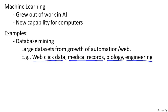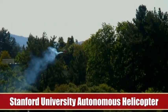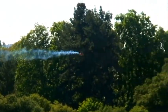A second range of machine learning applications is ones that we cannot program by hand. For example, I've worked on autonomous helicopters for many years. We just did not know how to write a computer program to make a helicopter fly by itself. The only thing that worked was to have a computer learn by itself how to fly the helicopter.